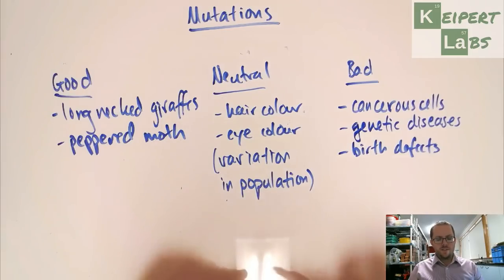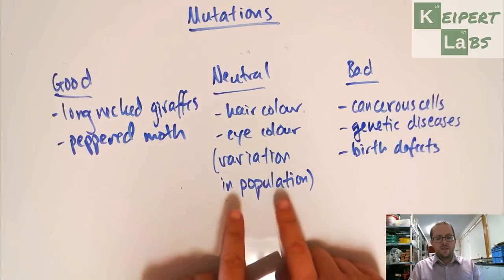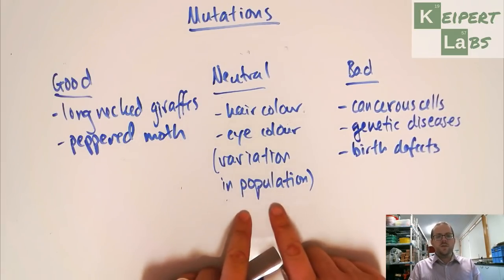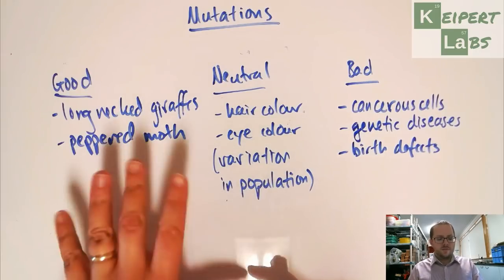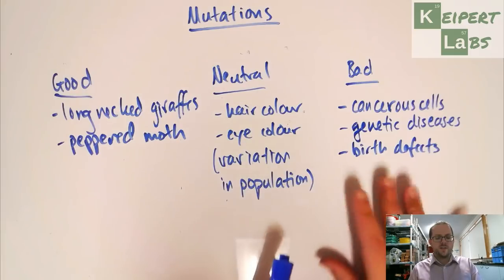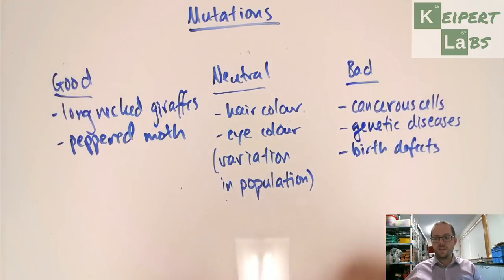So we can see that mutation is a natural part of how variation in the population develops. So that these mutations that occur through random chance that affects the codes in your genes can have positive effects, negative effects, or may just give rise to different variations in the population. Thanks very much for watching. Bye for now.